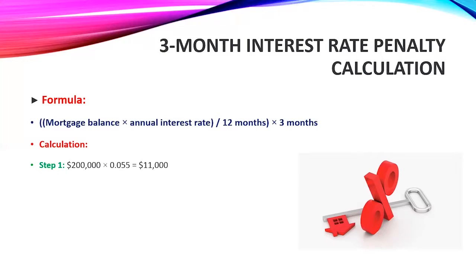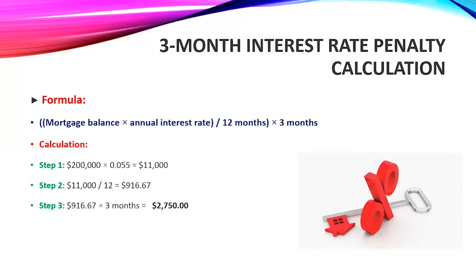For the calculation: Step 1 — take $200,000 and multiply by 5.5%, which gives us $11,000. This is the interest the lender would charge for the entire year. Step 2 — take $11,000 and divide by 12 months to get the interest for one month, which gives us $916.67. Step 3 — take the one-month interest and multiply by three, which gives us $2,750. That is the total three-month interest penalty.